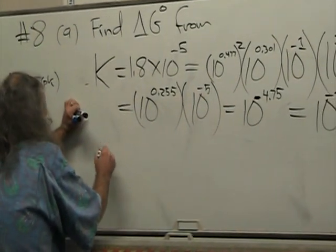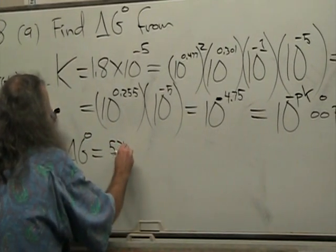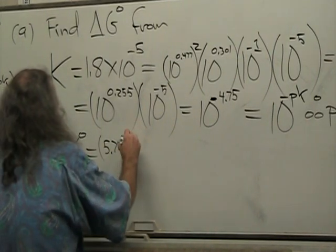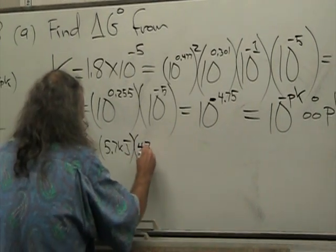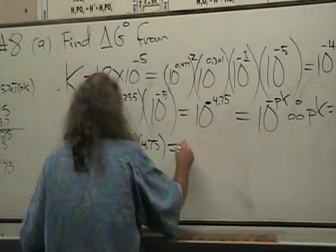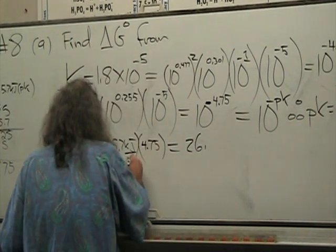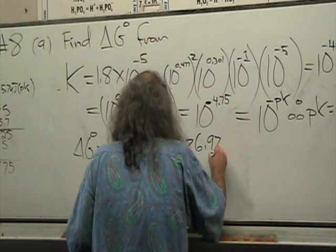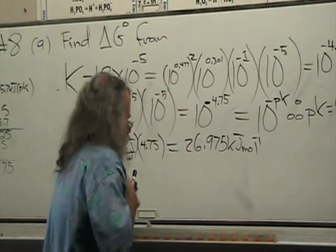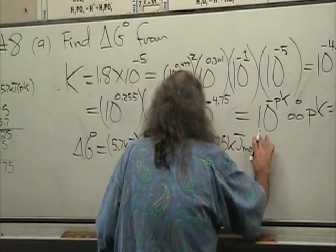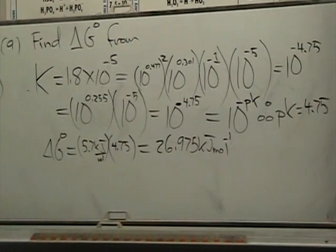And I have 1, 2, 3 decimal places. So delta G naught is equal to 5.7 kilojoules times 4.75 equals 27.0975 kilojoules per mole. And that's part A.